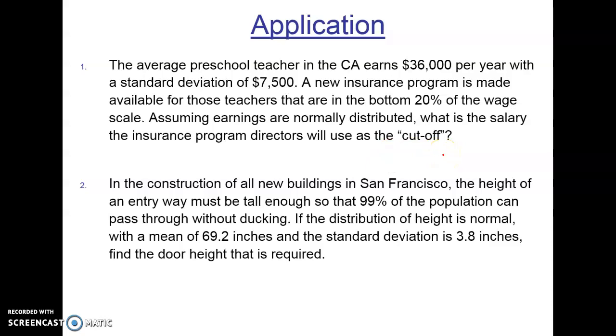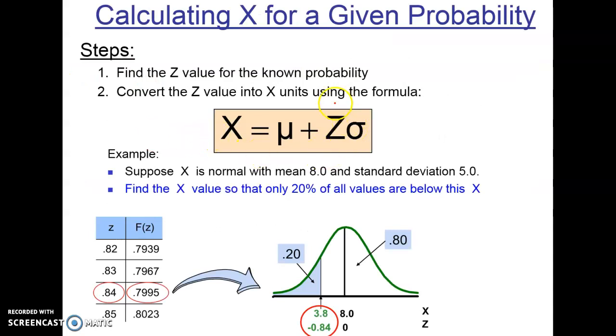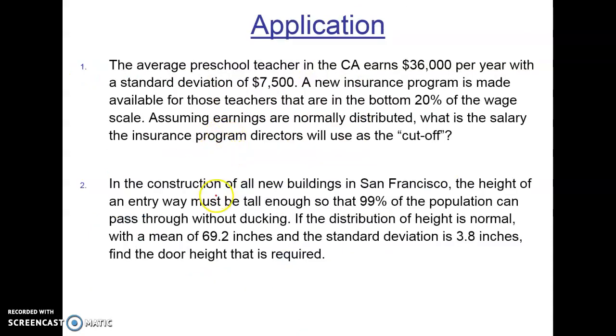So notice here, we're going from a Z to an X. We've been given our standard deviation, we've been given our mean, and we've been given our percentage. With this percentage, we can then derive the Z value and solve for X. Just going back to this formula here.